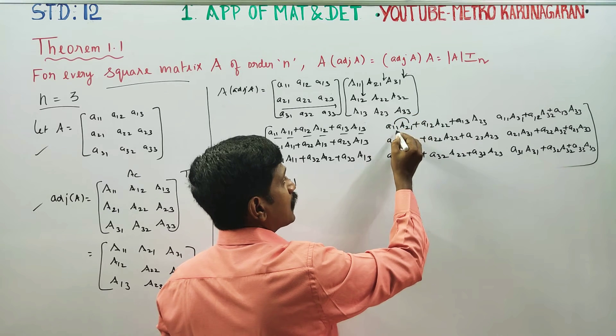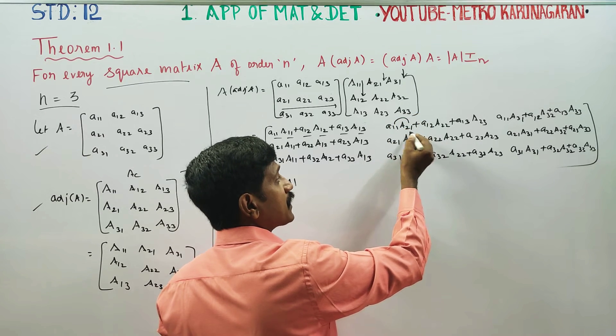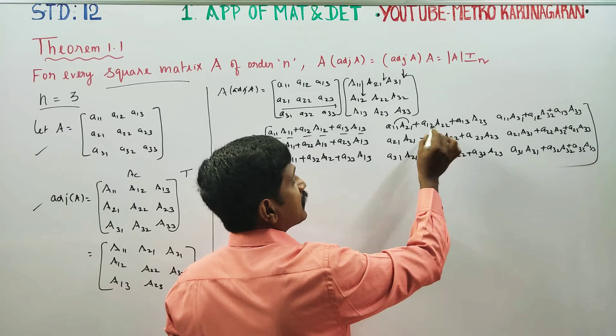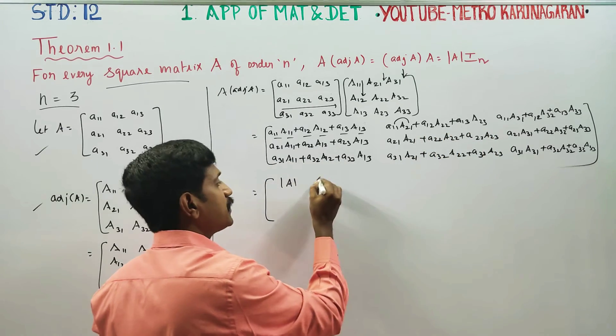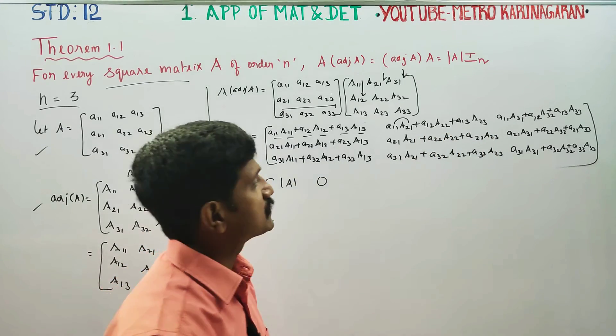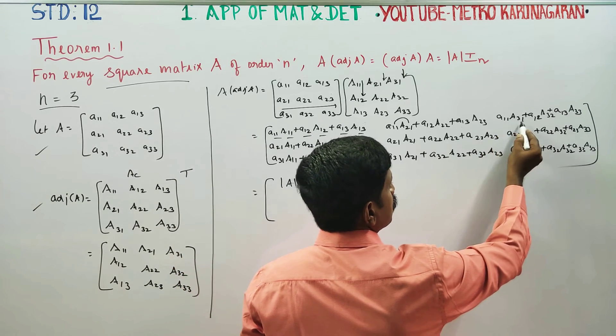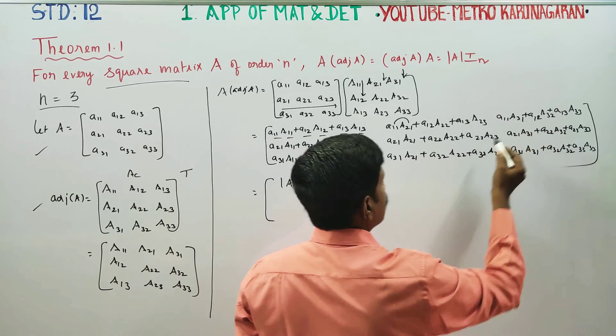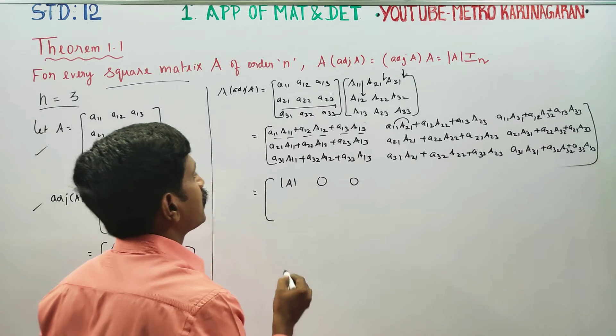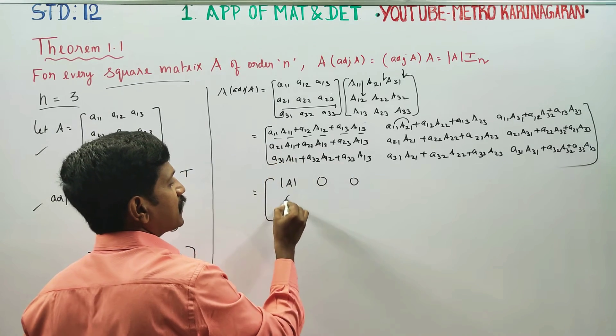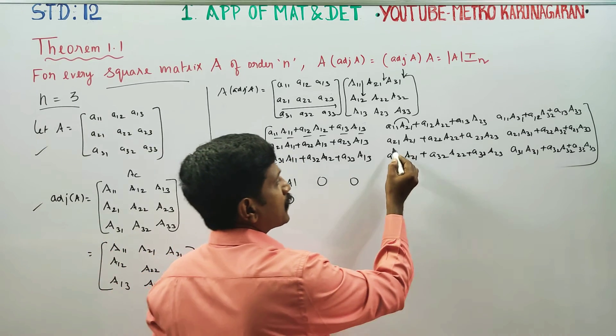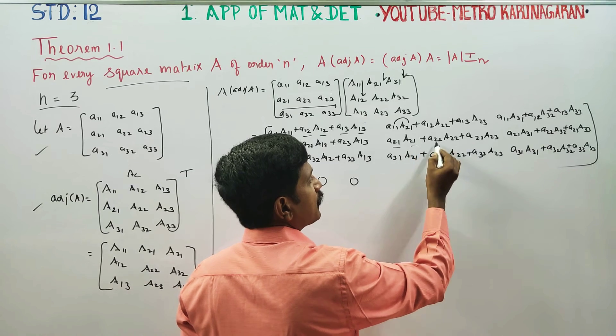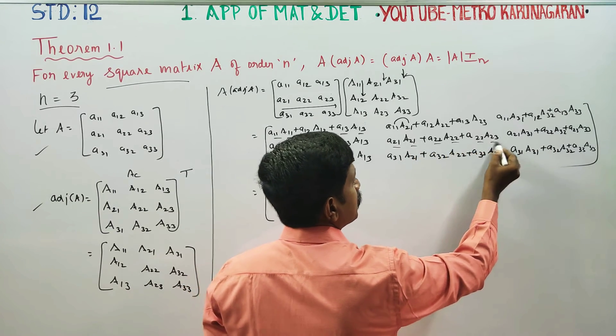However, element with different cofactor, like 11 with 21, or 11 with 31, element with other cofactor becomes 0. So this becomes 0, this becomes 0.